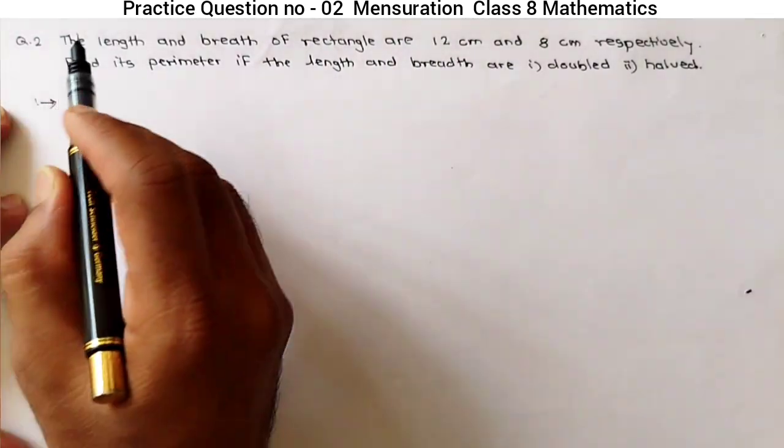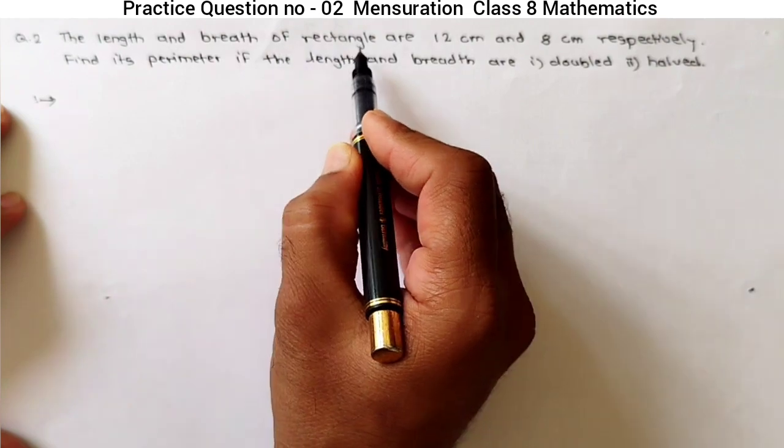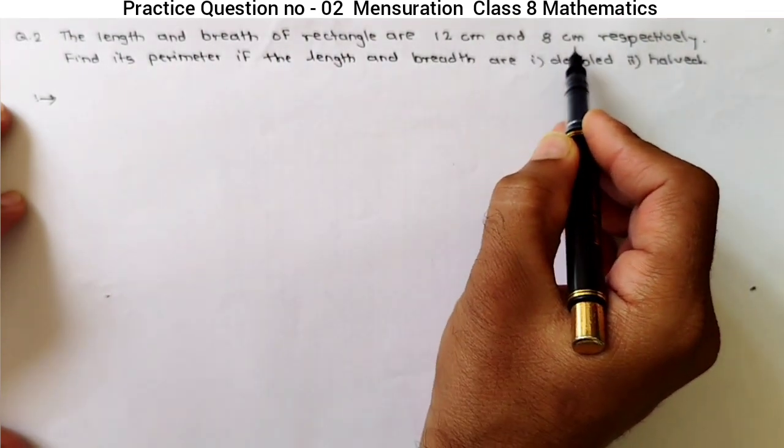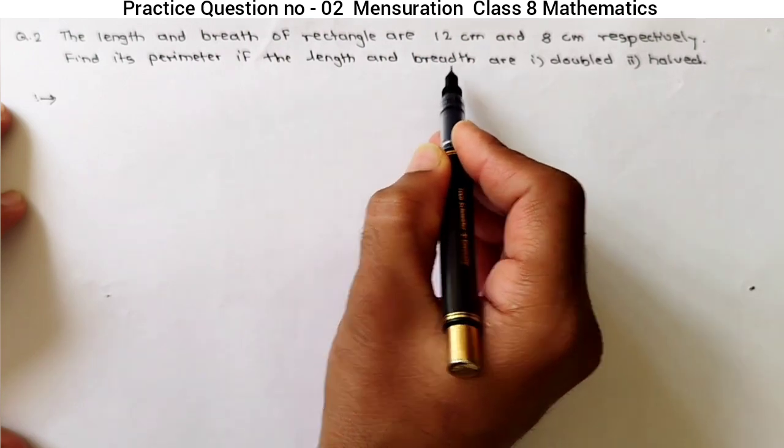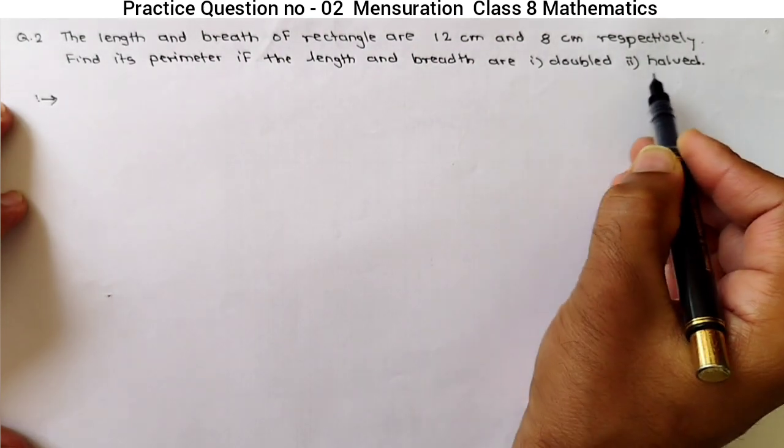This is the word problem. See the question. The length and breadth of rectangle are 12 cm and 8 cm respectively. Find its perimeter if the length and breadth are first double and second half.